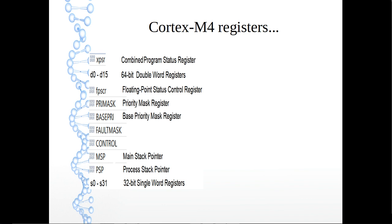There are certain special registers, for example: the combined program status register XPSR, the 64-bit double-word register D0 to D15, the floating point status and control register, priority mask register, base priority mask register, MSP, PSP, and S0 to S31 which are 32-bit single-word registers. Today I will focus on the program status register, the control register, MSP, and PSP as important aspects.